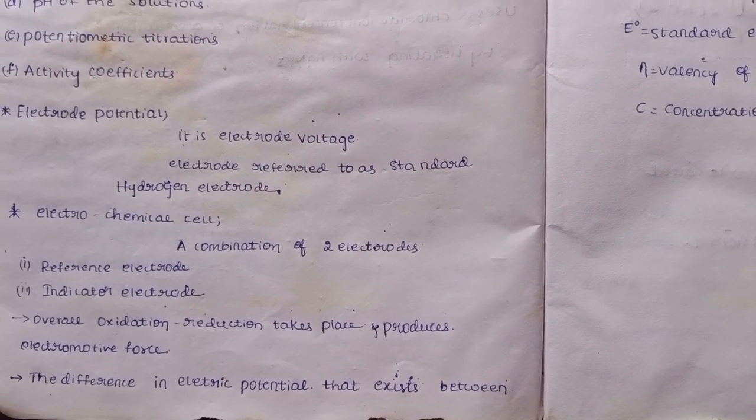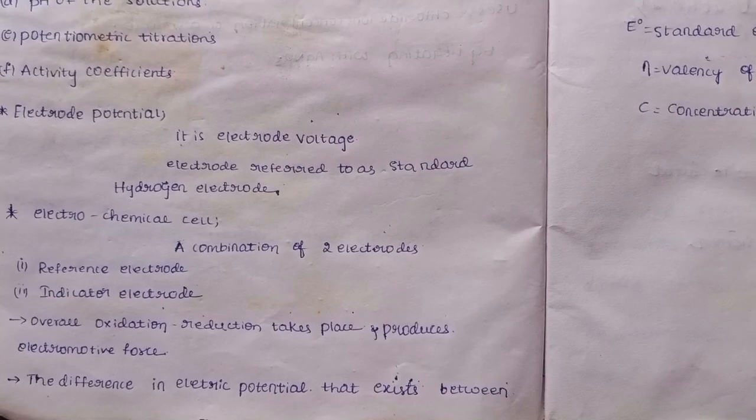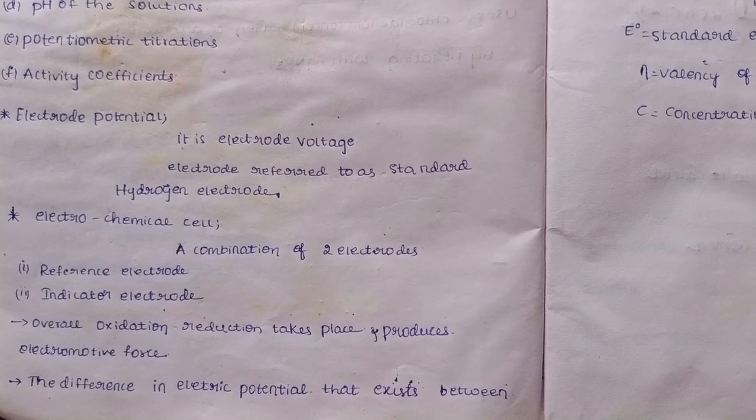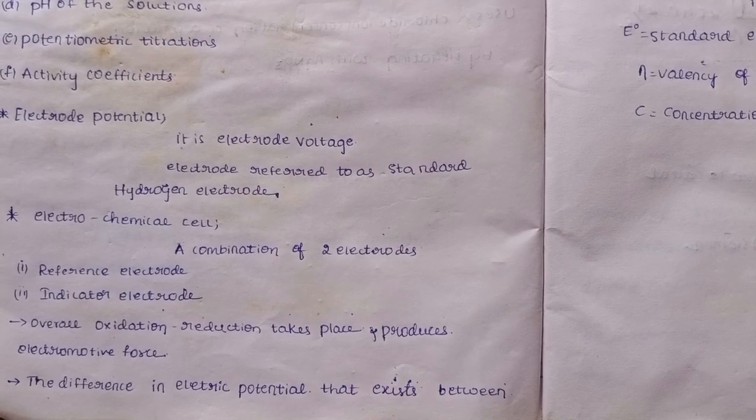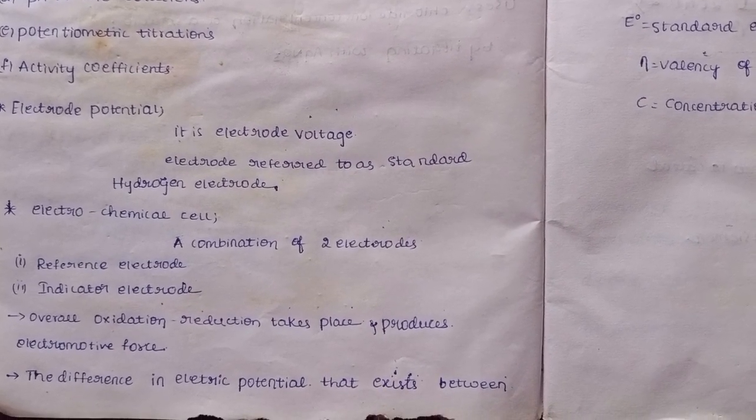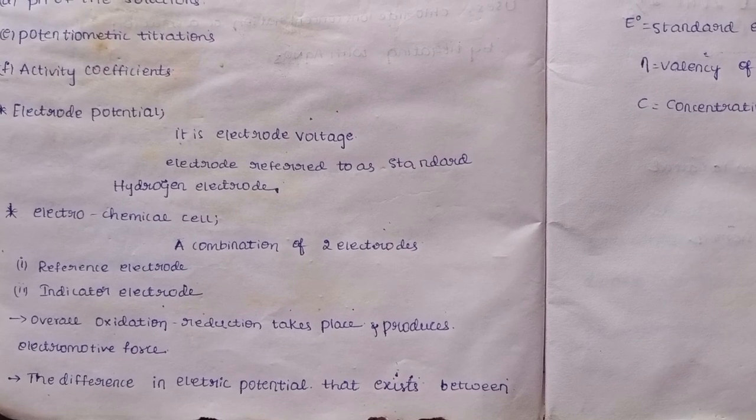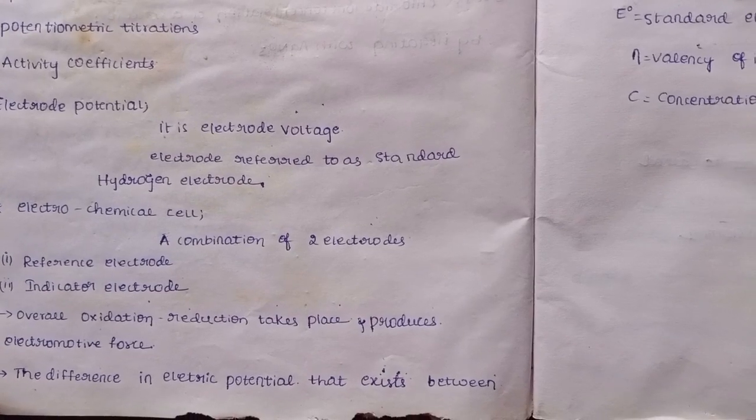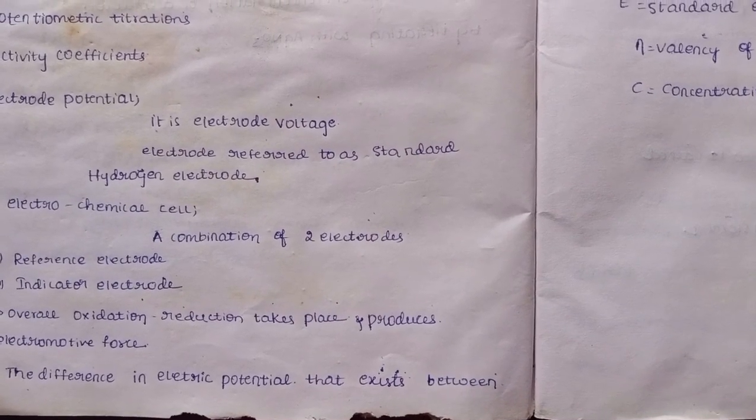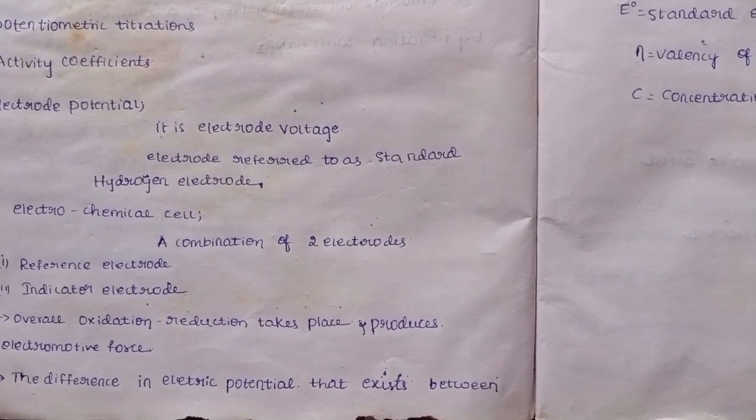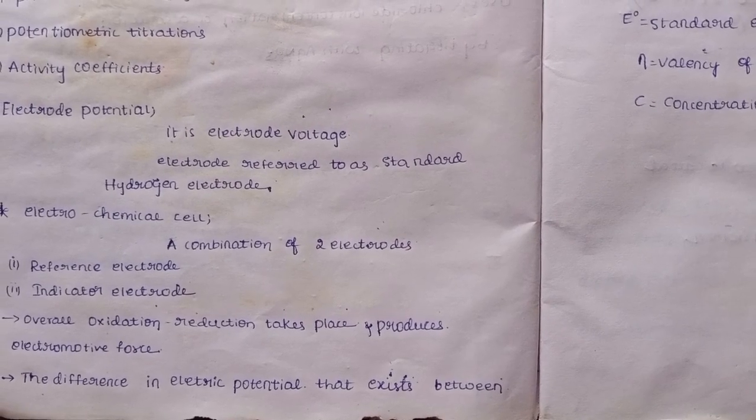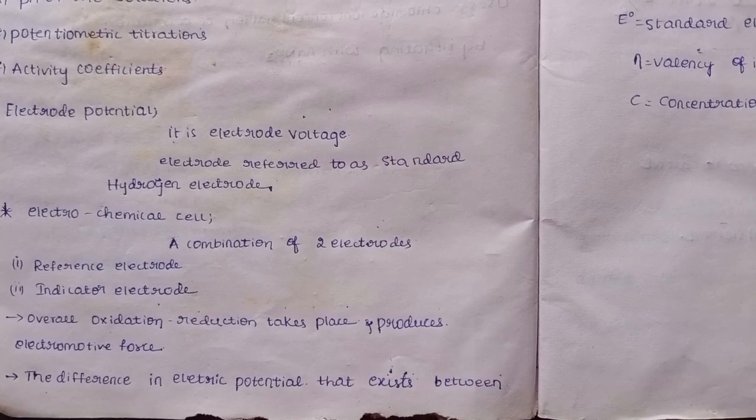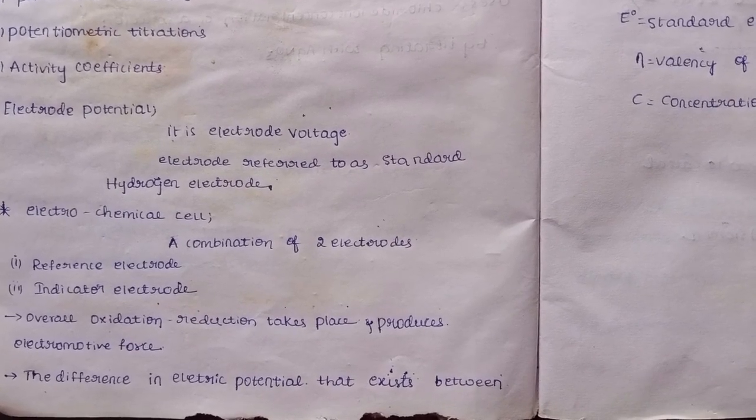What is an electrochemical cell? It is a closed glass system. The electrode process - it is a combination of two electrodes. It is a combination in an electrochemical cell. It is a reference electrode and an indicator electrode. What is the reference electrode?